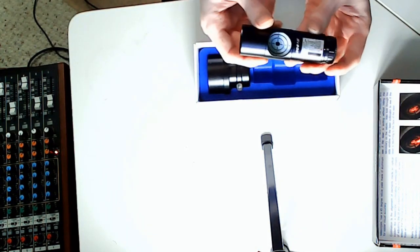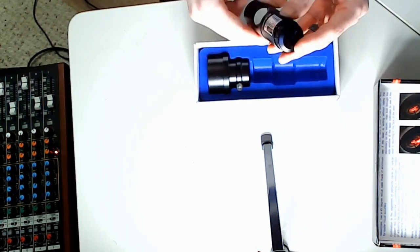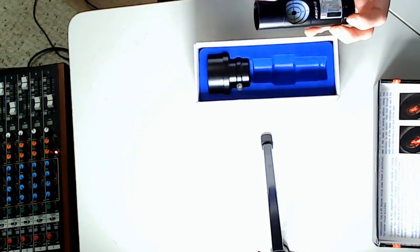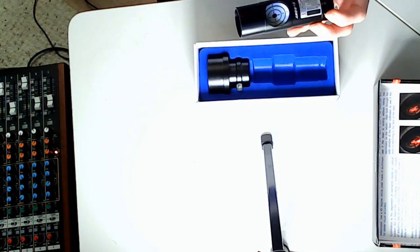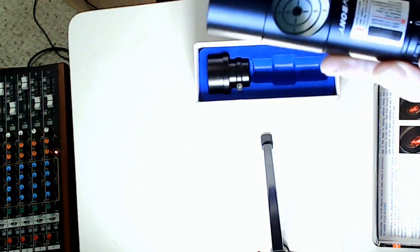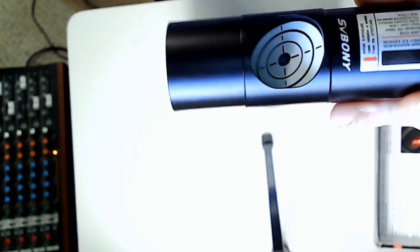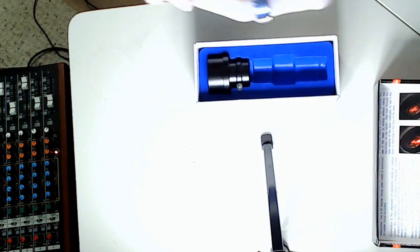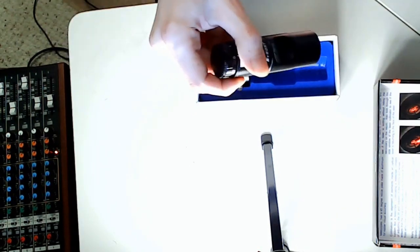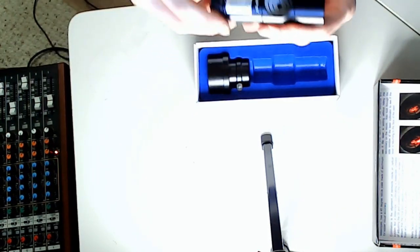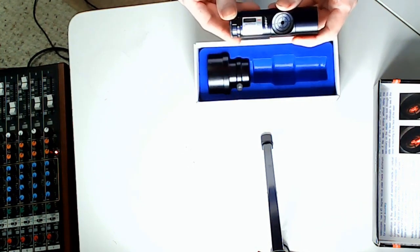And I'd say for 27 bucks you can't go wrong. This thing's built like a tank. It has the angled aluminum piece there so you can see the laser really easy. This just fits right in the eyepiece, this part goes in, and then you just turn it on and you collimate it.